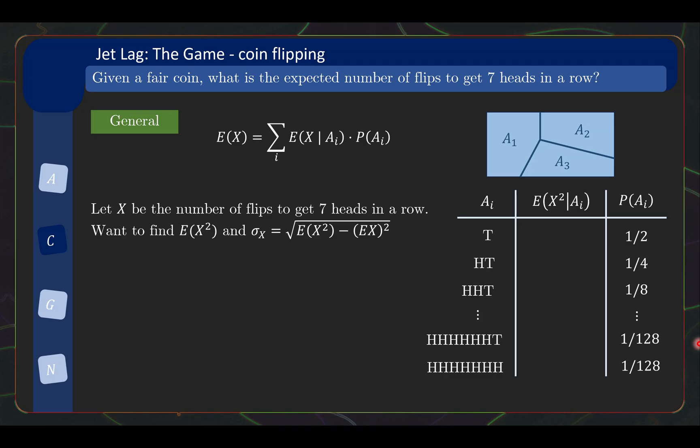Now, thankfully, you can actually apply a very similar logic to calculate the standard deviation. So firstly, the standard deviation is given by this formula over here. So expectation of X squared this time minus the expectation X quantity squared. So what we need to do, we already have E(X), which is 254. We need to calculate E of X squared.